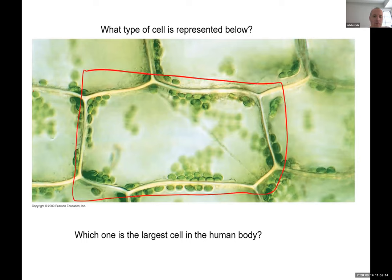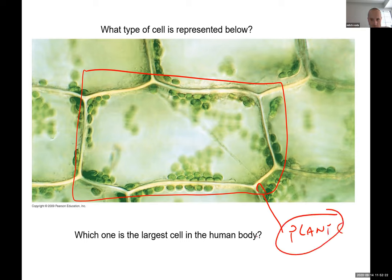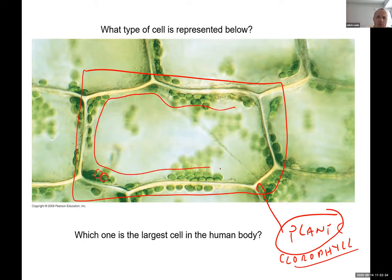Here you can see a cell — this is a plant cell. How do we know? It's green, which means it contains the pigment chlorophyll. You can see the chloroplasts pushed to the outside, and inside there is the central vacuole which pushes the chloroplasts toward the side. On the outside you can see the cell wall.